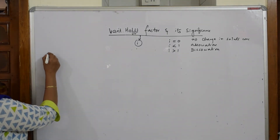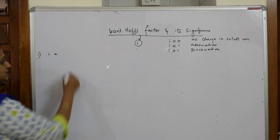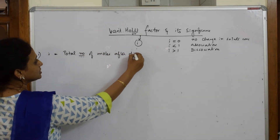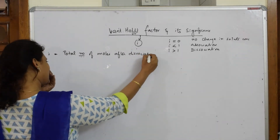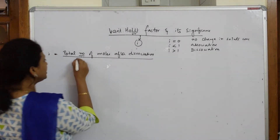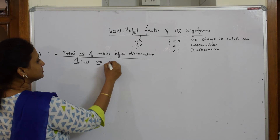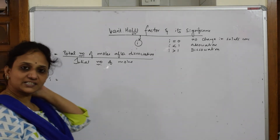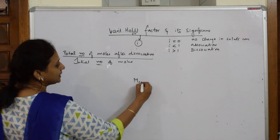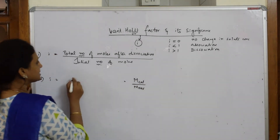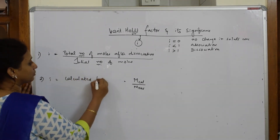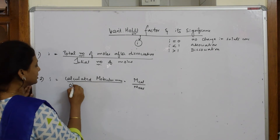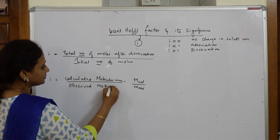There are three important formulas for I. First: I equals total number of moles after dissociation divided by initial number of moles. Second: I equals calculated molecular mass (M_cal) divided by observed molecular mass (M_observed).